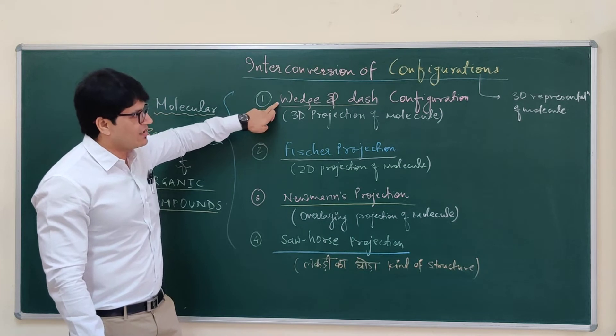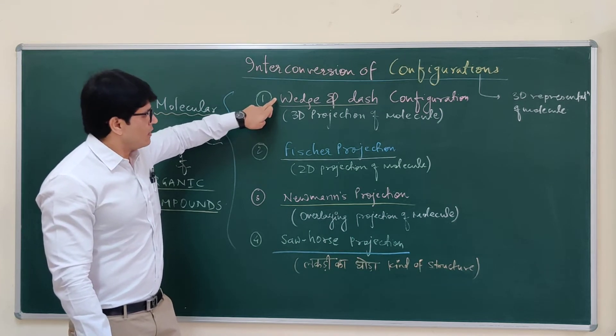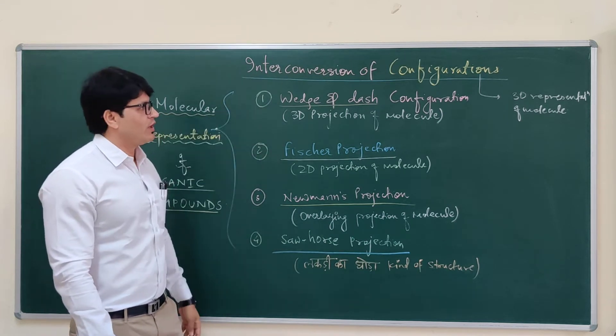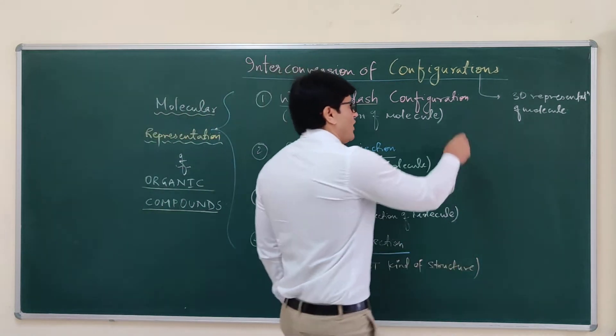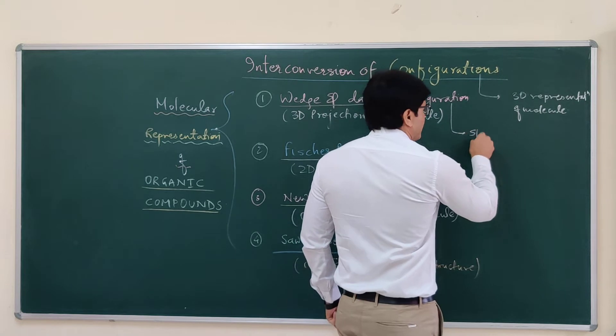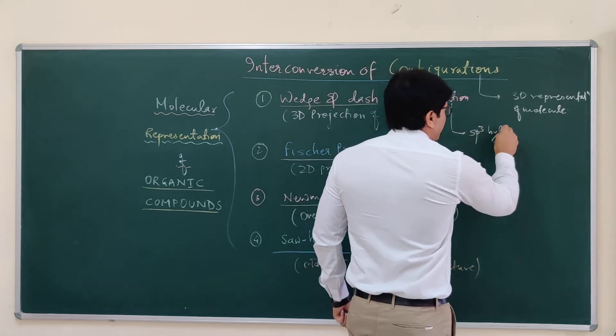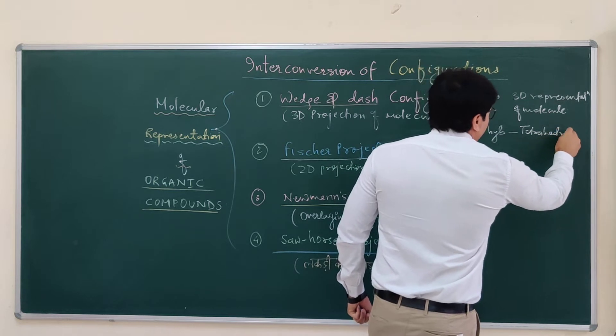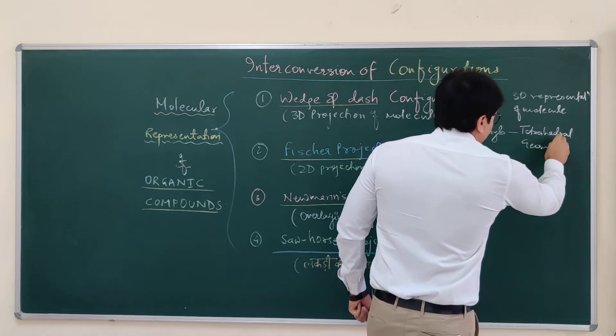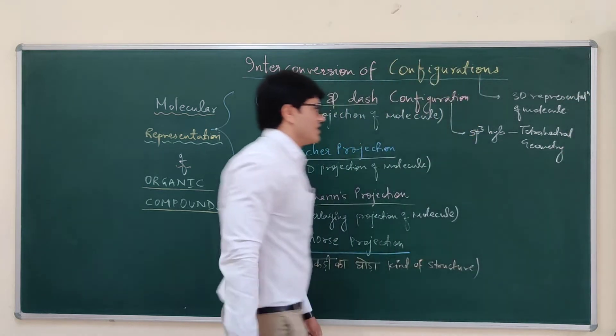The first and very important that must be known by all of you in chemical plotting, the wedge-dash configuration. Wedge-dash configuration is simply based on SP3 hybridized tetrahedral geometry. This is the first.